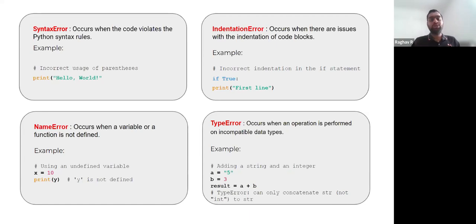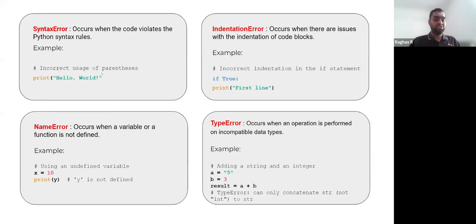One common type of error is the syntax error, which occurs when you violate Python syntax rules. For example, if you do not close the closing bracket in a function call, you would get an error. There can be many types of syntax errors — this is just one of them.